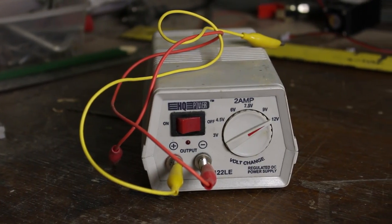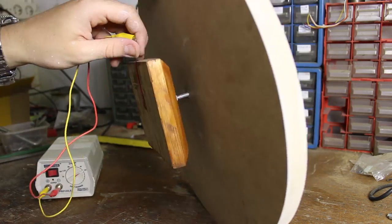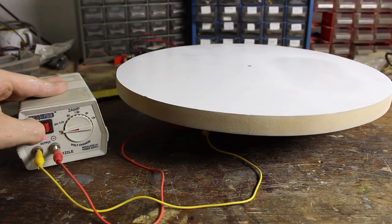For the power source I used my 3 to 12 volt power regulator and the last thing to do was to cover the middle hole with the white round sticker and there we have it guys.